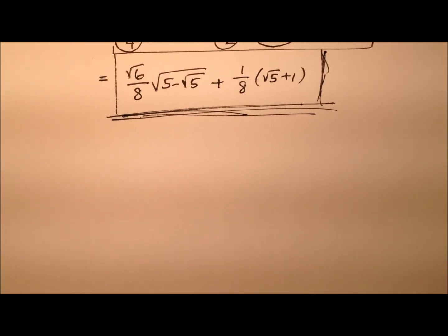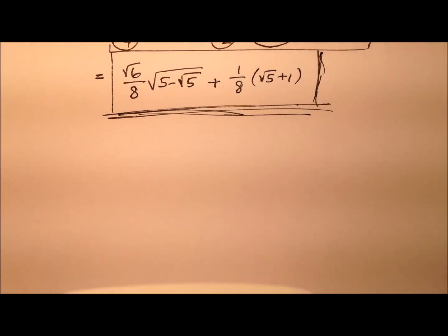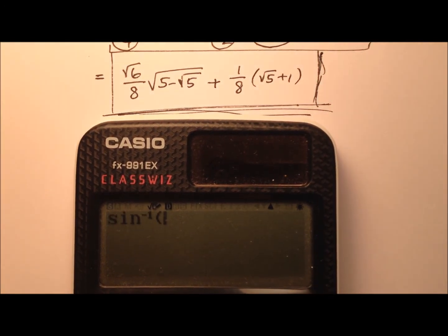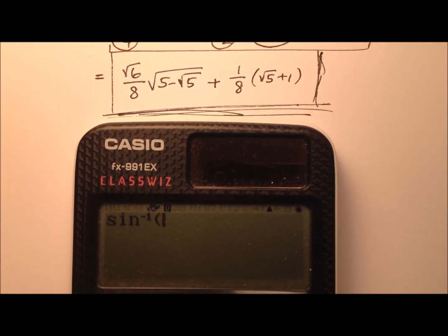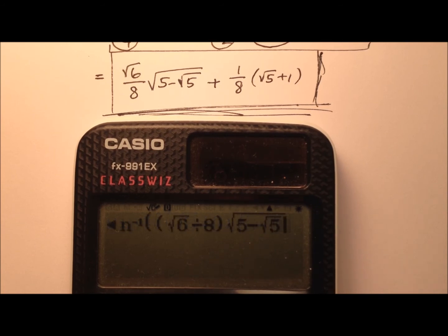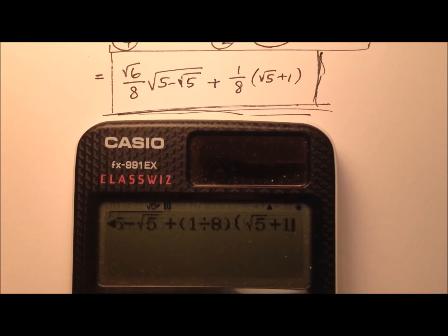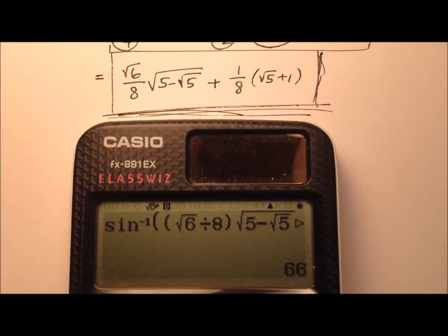Let's grab a calculator and ensure that indeed it works. Here's our calculator that we're going to use. Let's do the inverse sine here for this value. It looks like to start off with we have the square root of 6 divided by 8, and we're going to multiply that by this radical expression. Let's jump out of there and we're going to add to that 1 eighth times the square root of 5 plus 1, and we'll close up all those parentheses, and we get 66 degrees.